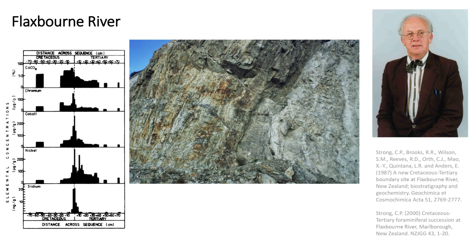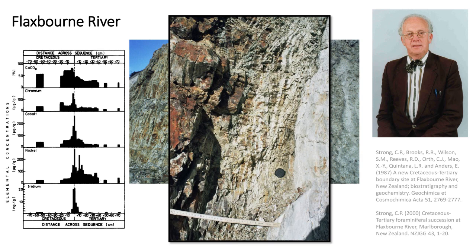Flaxborne River is Percy and Robert Brooks's preferred site, considered the most complete KT boundary section with a full sequence of foram zones. Again there's an iridium anomaly, various other elemental anomalies, and a decrease in calcium carbonate due to the extinction of planktonic forams and calcareous nanofossils, then slow recovery. The iridium is not an abrupt spike — it's somewhat spread into the late Cretaceous because the section is quite weathered, causing elemental anomaly migration down into the top Cretaceous. There's also slight migration into the basal Paleocene, but all consistent with the asteroid theory.